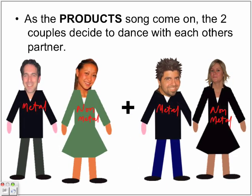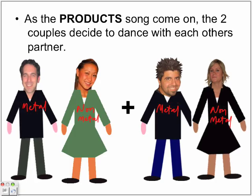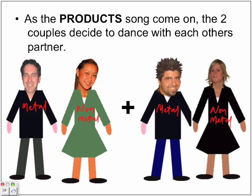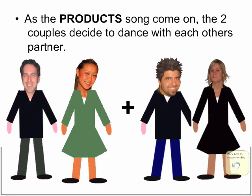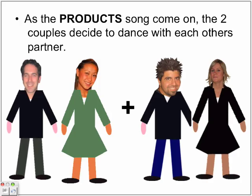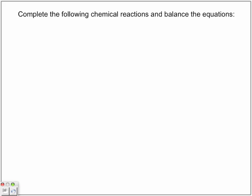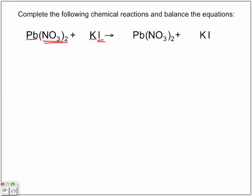Remember, when combining it's always going to be metal, non-metal, metal, non-metal, always in that order — and when writing them out, write the metal first. Complete the following chemical reactions and balance the equations. Here we have lead(II) nitrate and potassium iodide. Let's identify: metal, metal, non-metal, non-metal. Watch what happens — they switch places, the two metals come together.